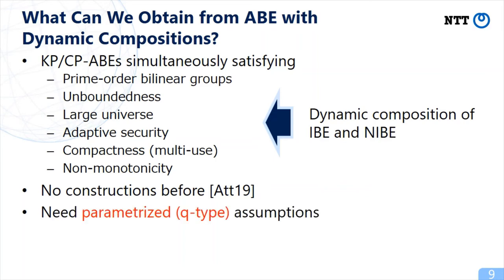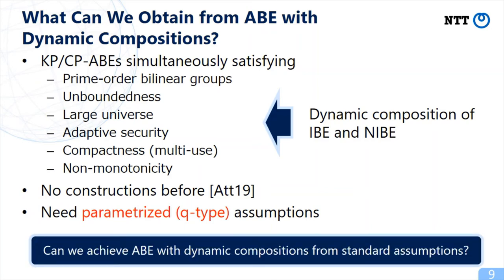However, Atapadung's technique needs parameterized assumptions, or Q-type assumptions. So a natural question is: can we achieve ABE with dynamic compositions from standard assumptions? Because if we have such a framework, we can translate new ABEs satisfying these properties from standard assumptions.